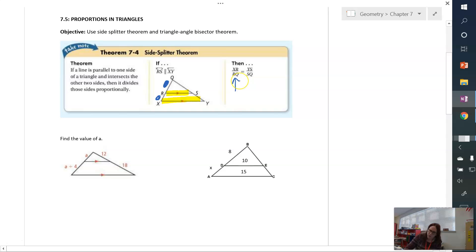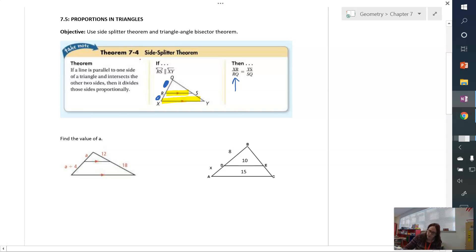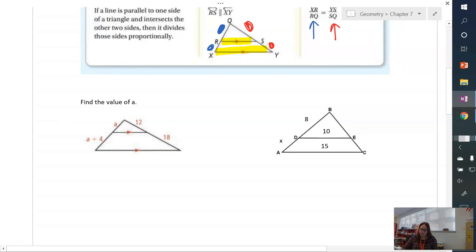And notice that is one ratio. And on the other side of the triangle, we can also relate the distance between s and y and q and s. That's the other side. We call that the side splitter. So let's do some problems with the side splitter.